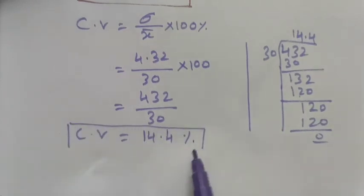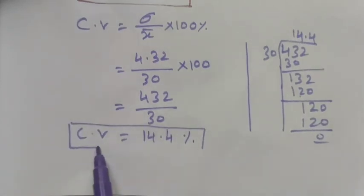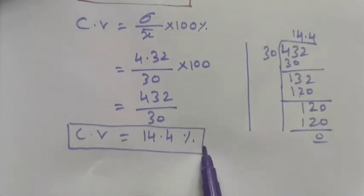Therefore, the coefficient of variation CV is equal to 14.4 percentage, which is the coefficient of variation of the given data. Thank you, students.